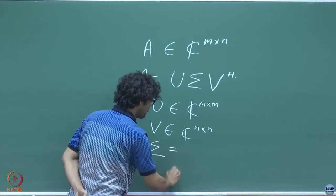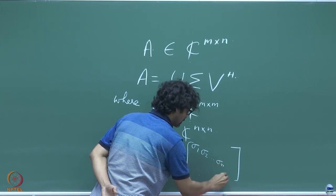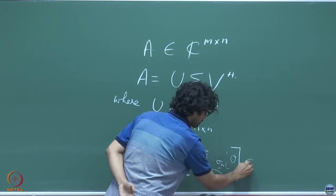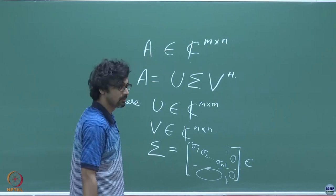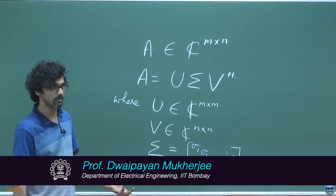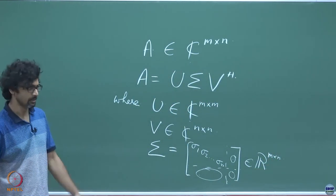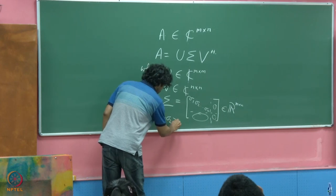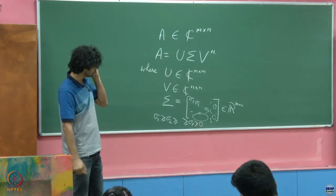And Σ has entries σ₁, σ₂ until σᵣ, then zeros elsewhere. This is real, and these are in fact the singular values of the matrix A. The size of Σ is m×n. These are real numbers, and the important thing to note is that σ₁ ≥ σ₂ ≥ ... ≥ σᵣ, which is strictly greater than 0.